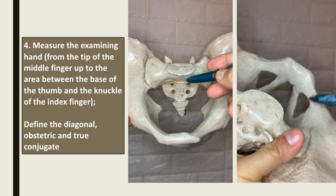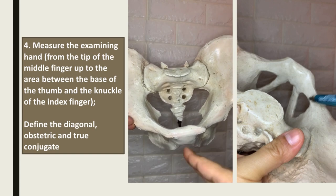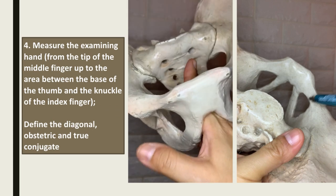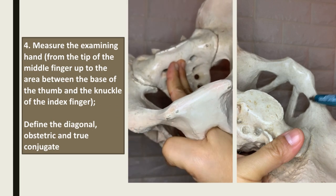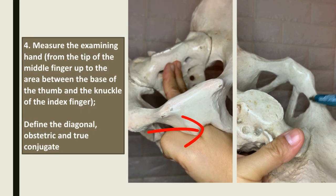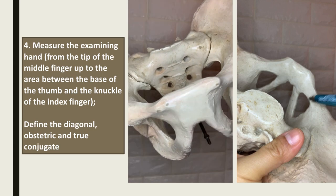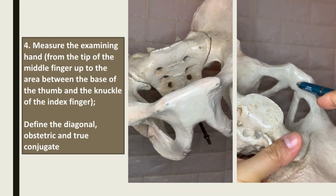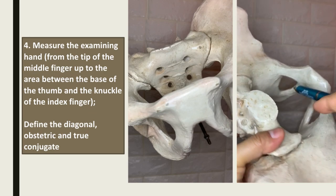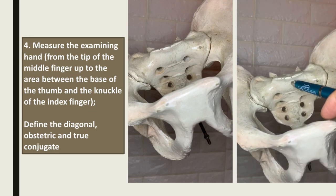To measure the diagonal conjugate, insert two fingers into the vagina and reach for the sacral promontory, then note where the inferior border of the symphysis pubis touches the area between the thumb and the knuckle of the index finger. That is the diagonal conjugate. The obstetric and true conjugates are derived from that measurement. Here we have the upper border, the middle, and the inferior border of the symphysis pubis, connecting each to the sacral promontory.